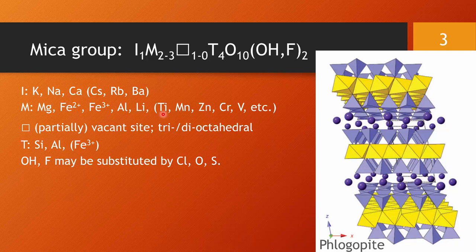We might find high temperature micas, biotite micas, with up to five, six, seven weight percent of titanium oxide, and it clearly would be a major element. But there is no defined end member, no defined titanium end member in the mica group. As mentioned before, depending on whether we are talking about trioctahedral or dioctahedral micas, the M position might be partially vacant.